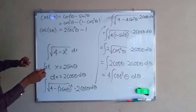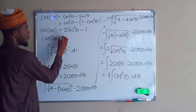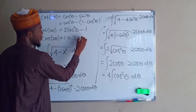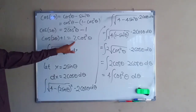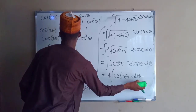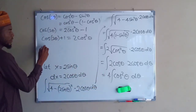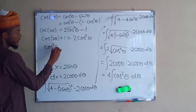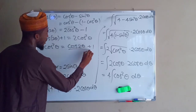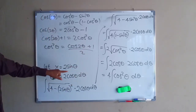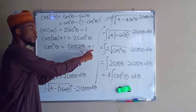If we bring 1 to the left hand side it becomes cos 2theta plus 1 equals 2 cos squared theta. Dividing both sides by 2 we obtain cos squared theta equals (cos 2theta + 1) divided by 2. So now we replace cos squared theta with (cos 2theta + 1) / 2.